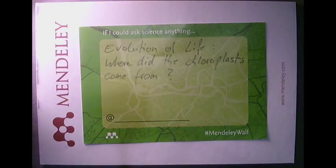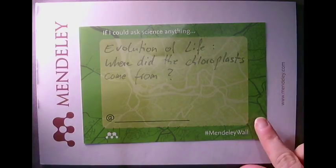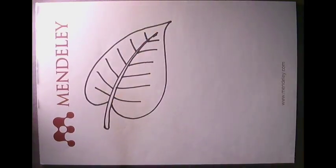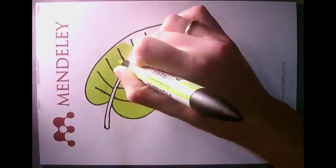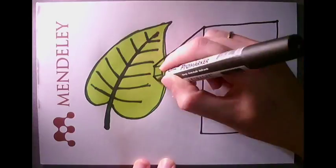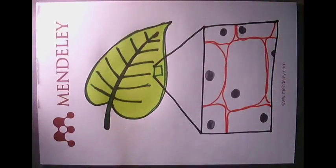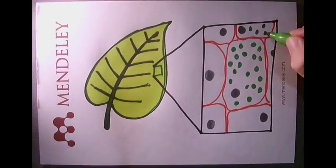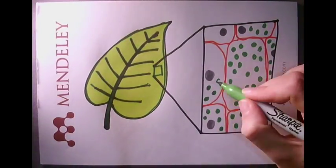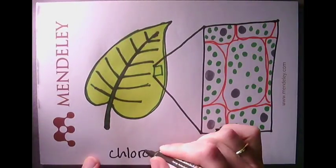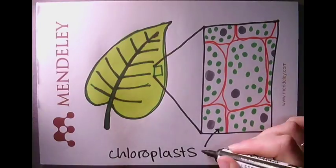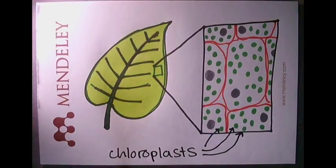Evolution of life. Where did the chloroplasts come from? This leaf is made up of thousands of cells. Each cell contains organelles called chloroplasts. So where did the chloroplasts come from?